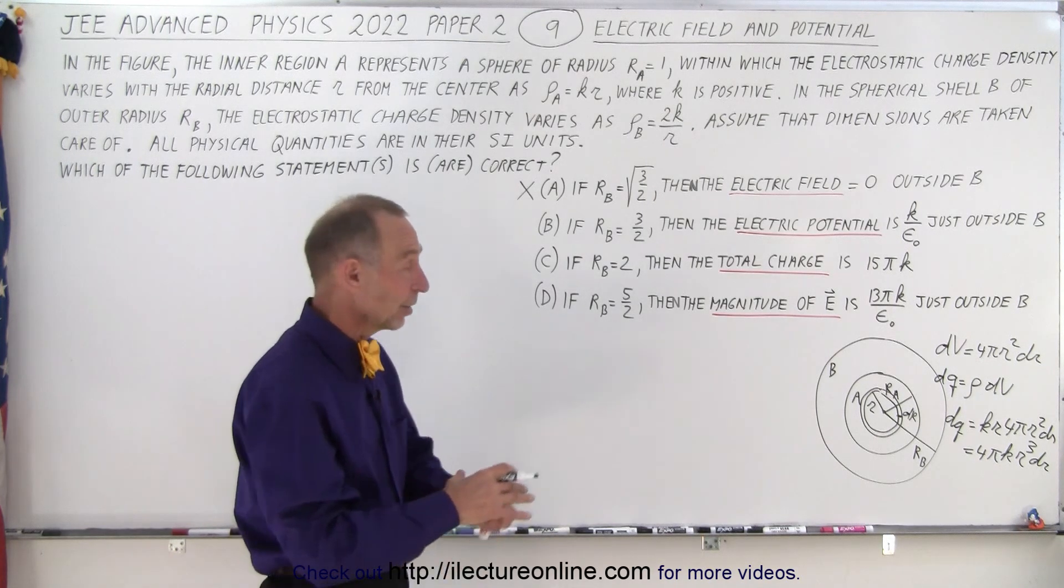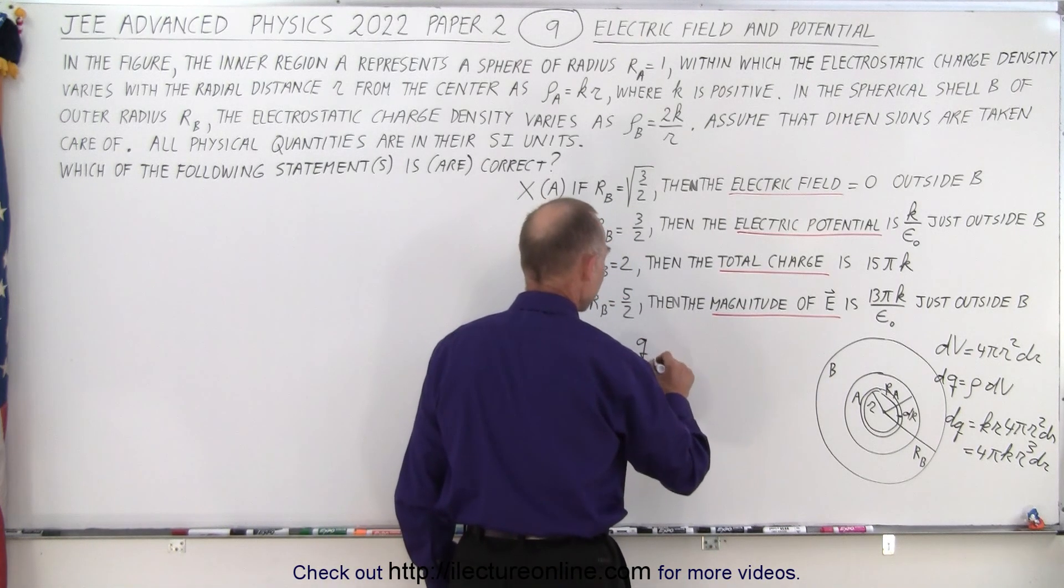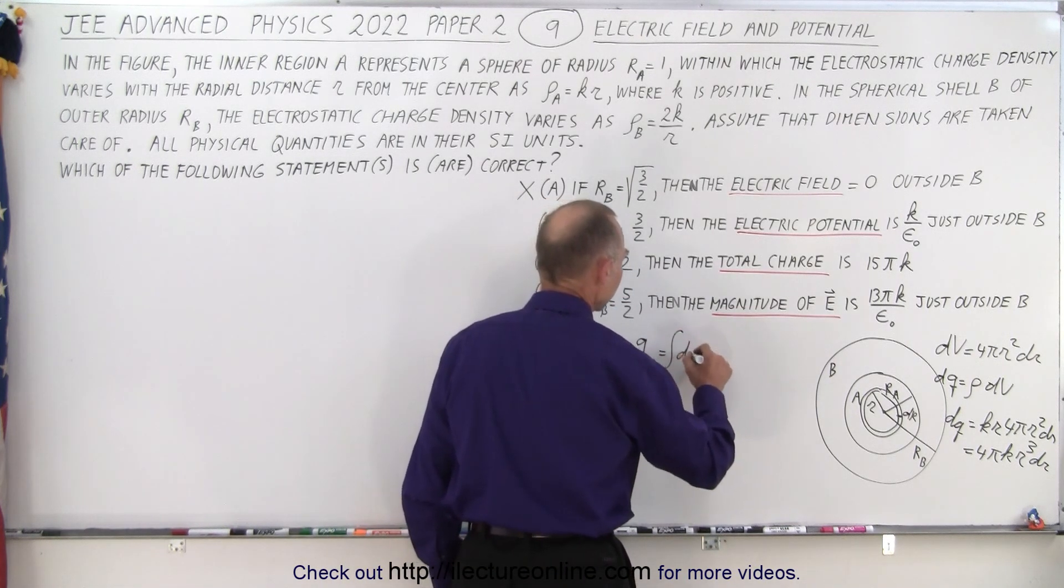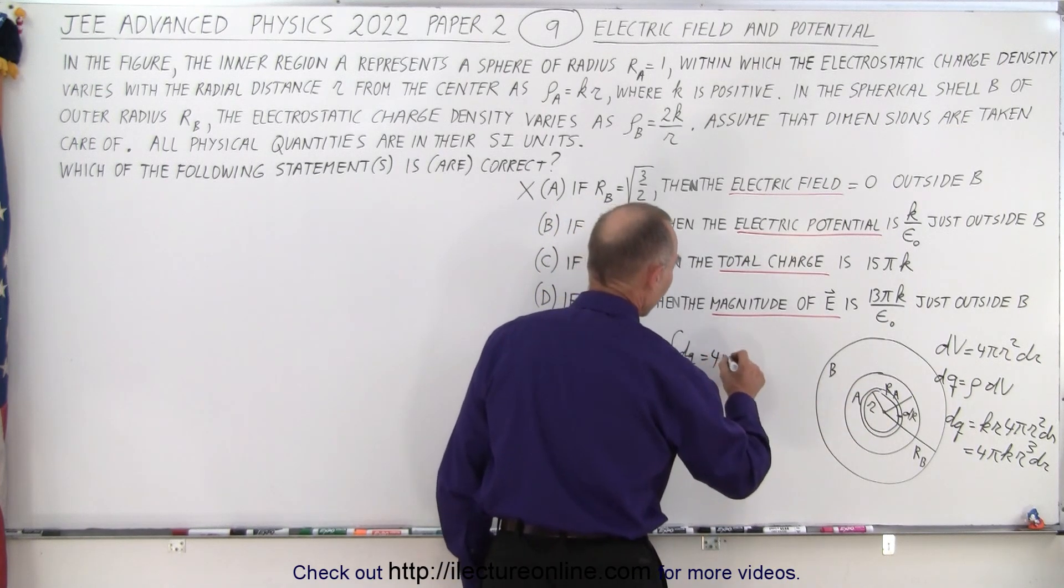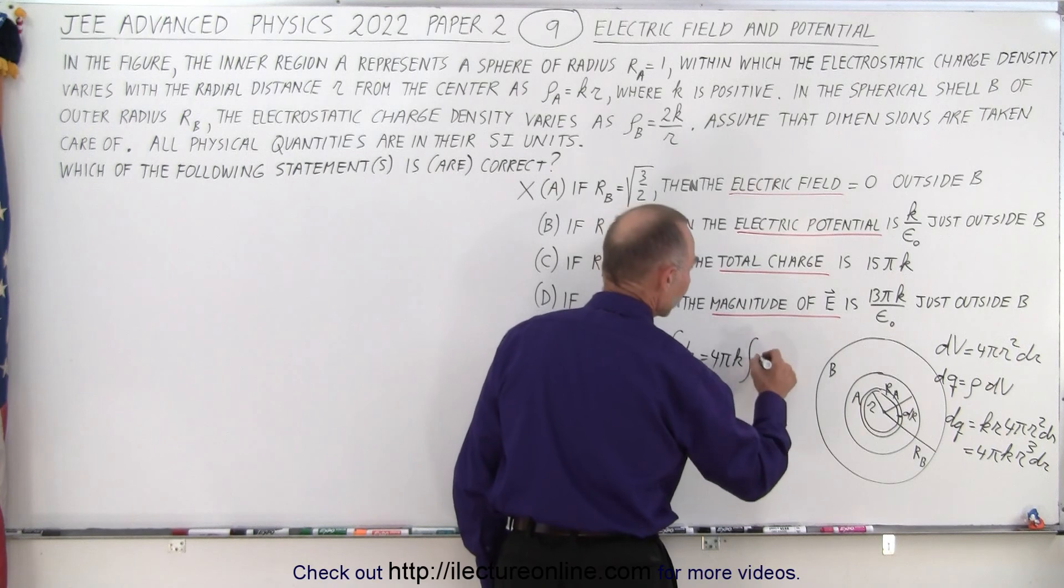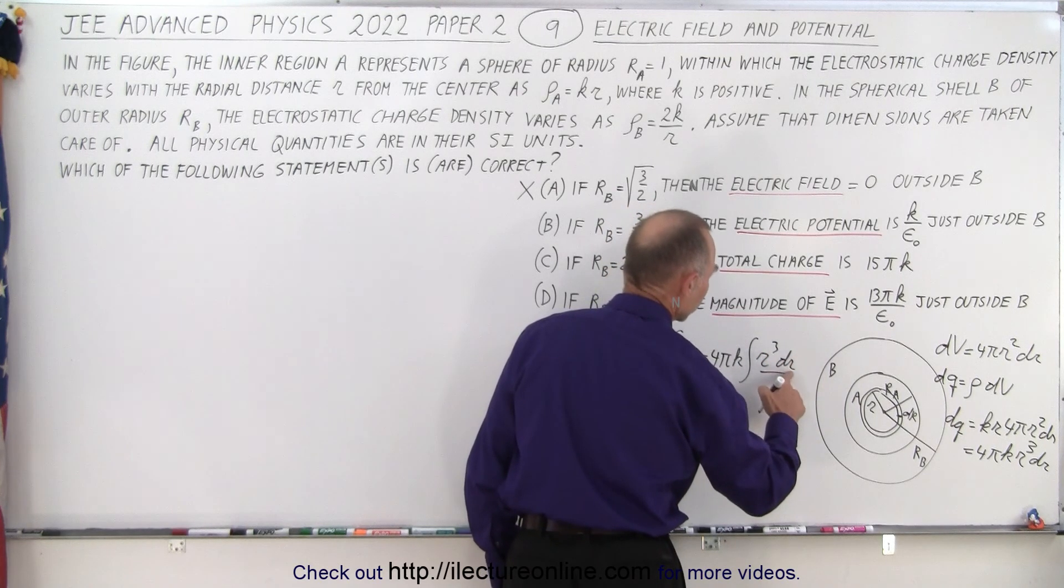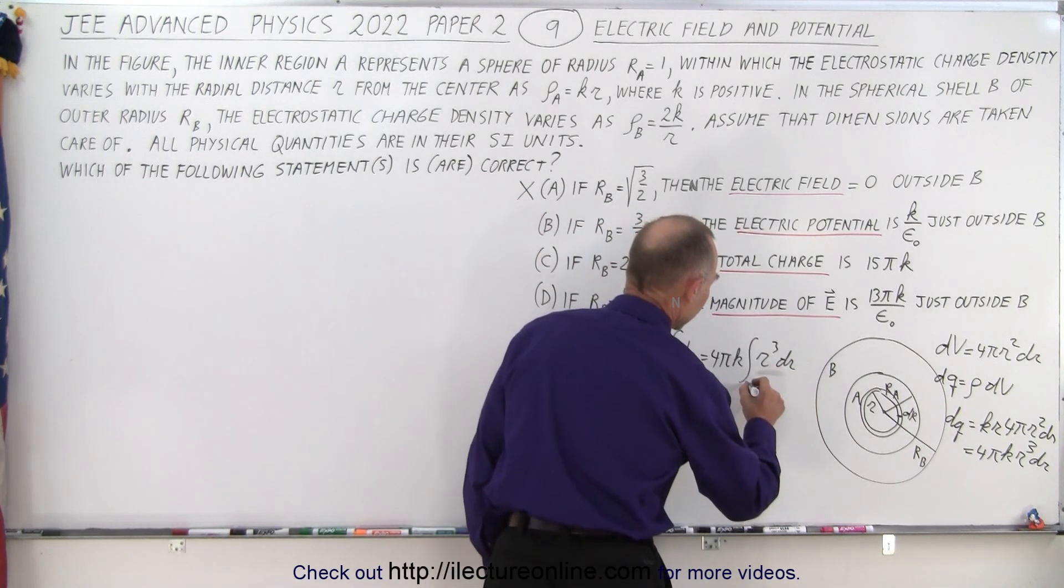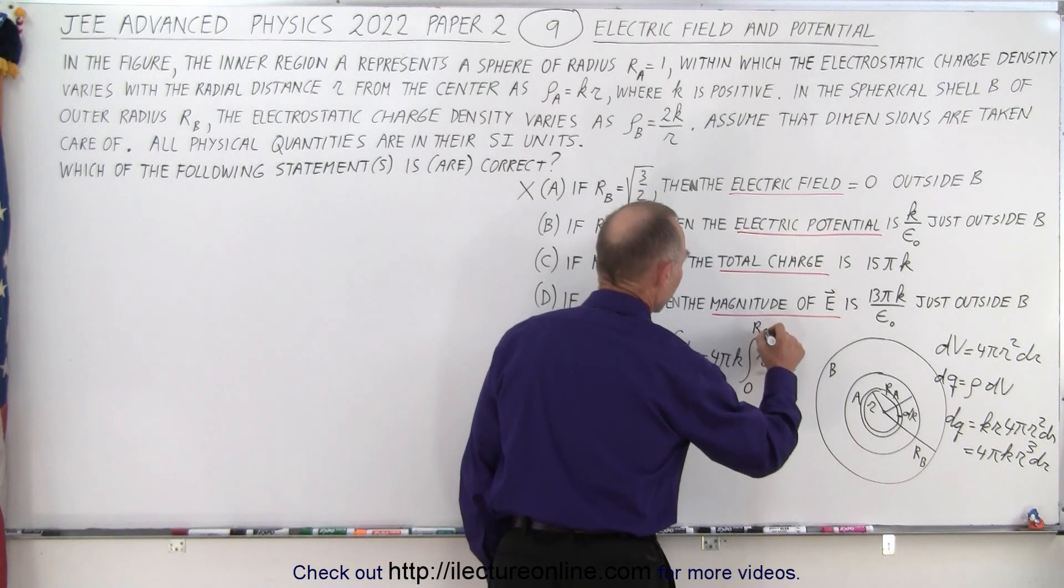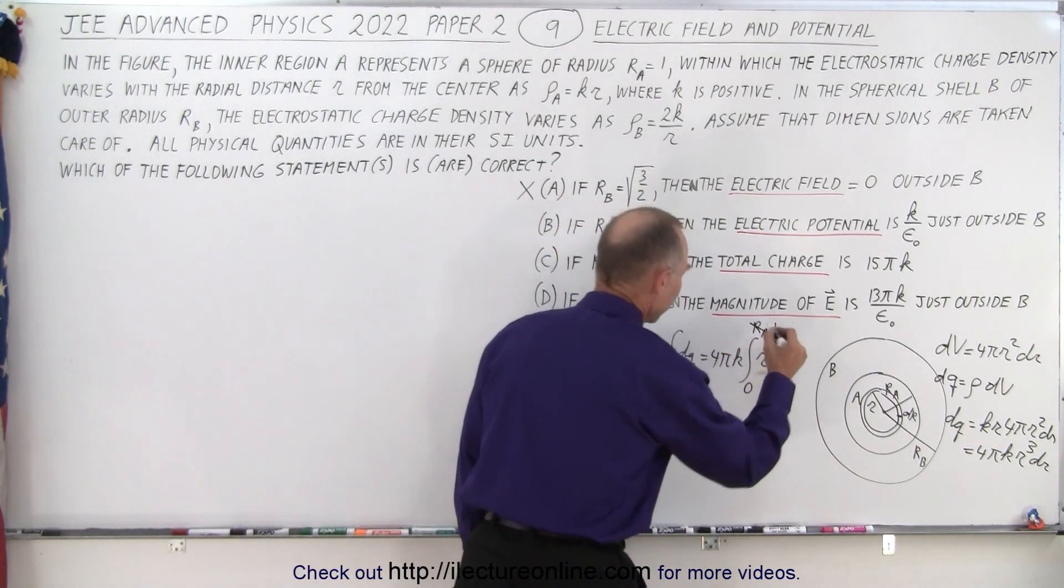So now we can find the charge in the entire sphere, so now we can say that q in A is equal to the integral of all the little dQs, which is equal to the integral of 4 pi k times the integral of r cubed dR from r equals 0 to r equals r sub A. And r sub A is 1, so we can replace that by 1.